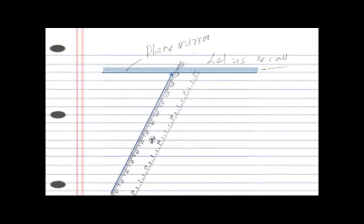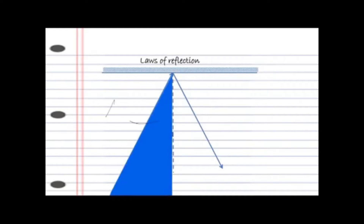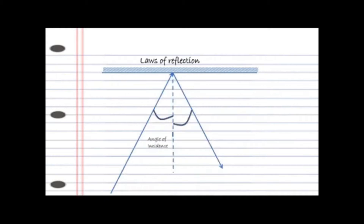We call a very important law, and that's the law of reflection. You have already seen in previous videos that if a light ray is incident on a plane mirror, it reflects in such a way that the angle of incidence is always equal to the angle of reflection. This is not only for a plane mirror — wherever reflection takes place, this law is followed.